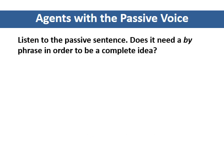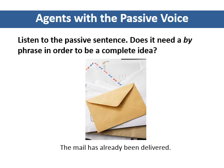Listen to the passive sentence. Does it need a by-phrase in order to be a complete idea? The mail has already been delivered. The sentence is complete. We do not need the by-phrase because we know that the post office delivers the mail. The agent or doer is obvious.